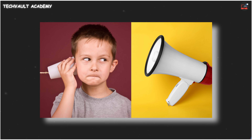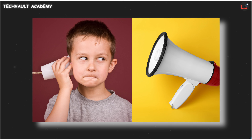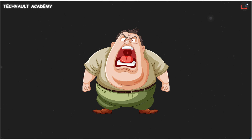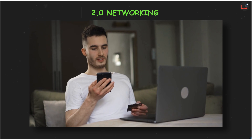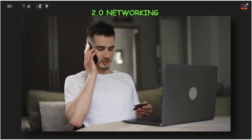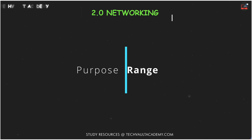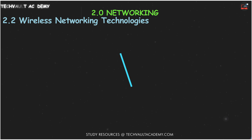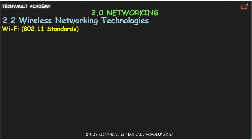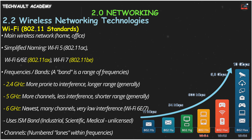Think of wireless technologies like different ways to communicate. You might yell across a room, use a walkie-talkie, or have a sophisticated phone call. Each has its purpose and range. First up, the big one — Wi-Fi, also known as 802.11. This is your go-to wireless network at home or work. It's like the main highway system for wireless data.